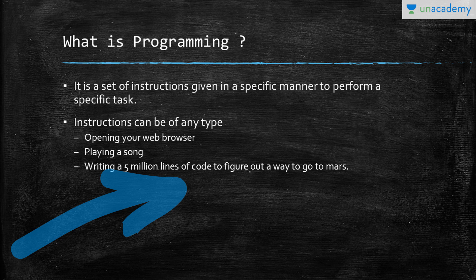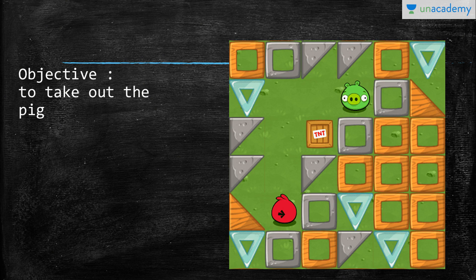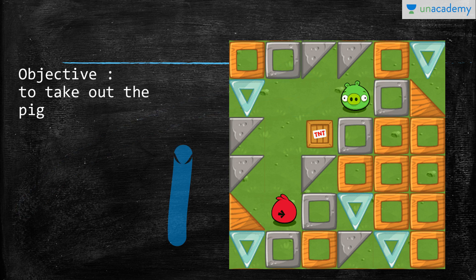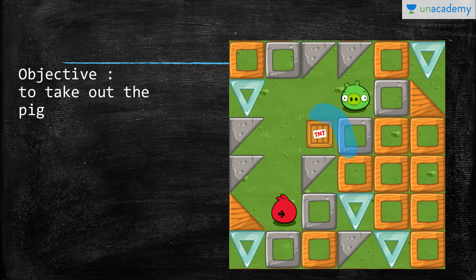We want to give specific instructions in a specific manner—that is programming. Let's take an example: we have our Angry Bird here, we want to defeat this pig sitting right up here. We have to give instructions to our Angry Bird so that it goes and defeats the pig over there.